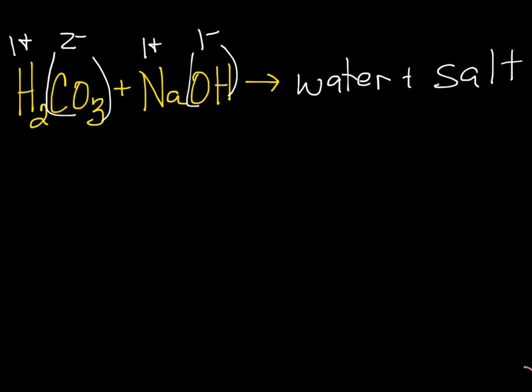The H from the acid and the OH from the base make our water. Don't worry that there are two H's on the acid. There are two H's because carbonate has a 2− charge and hydrogen has a 1+ charge, so we need two of them to neutralize the anion. When we bring over the H for the water, it's just H2O — one H from the acid, the OH from the base. We'll deal with the two H's in the acid when we balance the equation.